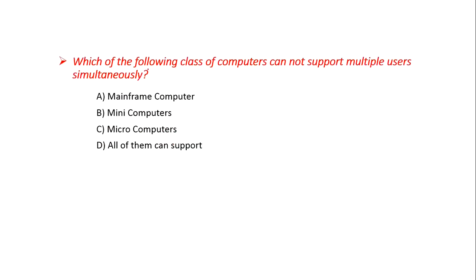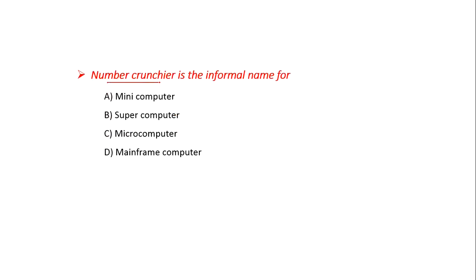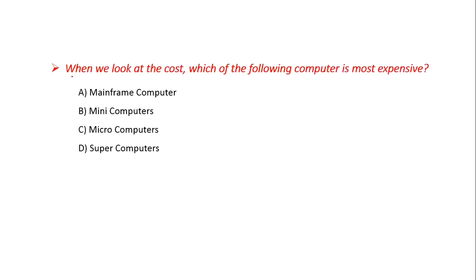Which of the following class of computers cannot support multiple users simultaneously? Option A: Mainframe, B: Mini Computer, C: Micro Computers, D: All of them can support. Mainframe and Mini Computers can support multiple users, but Micro Computers, which we also call Personal Computers, cannot support multiple users. The answer is C: Micro Computers. 'Number Cruncher' is the informal name for — Option A: Mini Computer, B: Super Computer, C: Micro Computer, D: Mainframe. The answer is B: Super Computer.